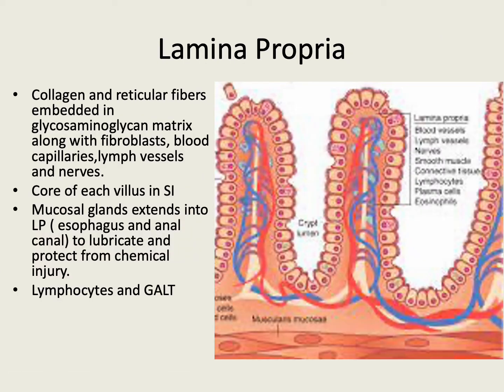The other layer of the mucosa is the lamina propria, which is made of collagen and reticular fibers embedded in a glycosaminoglycan matrix, along with fibroblasts, blood vessels, lymphatic vessels, and nerves. Each villus of the small intestine has a core filled with lamina propria. The mucosal glands extend into the lamina propria — that is, in the esophagus and the anal canal — to lubricate and protect it from chemical injury. It also consists of lymphocytes and gut-associated lymphatic tissue.